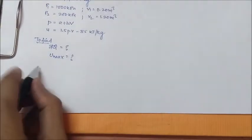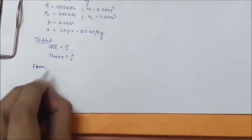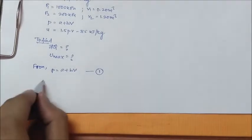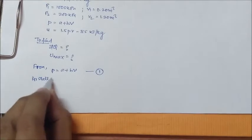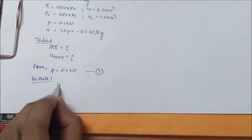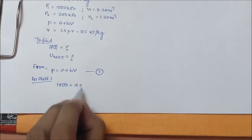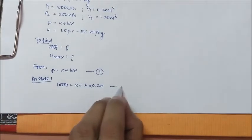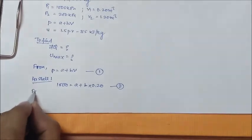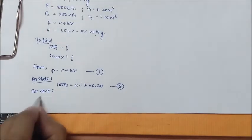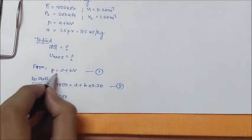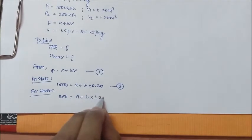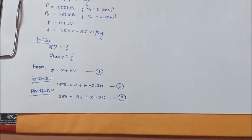From P equal to A plus BV — equation 1. For state 1 we have 1000 equal to A plus B into 0.20, call that equation 2. For state 2 we have 200 equal to A plus B into 1.20, call that equation 3.